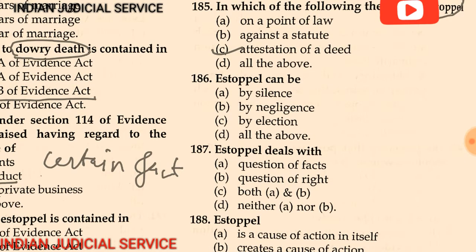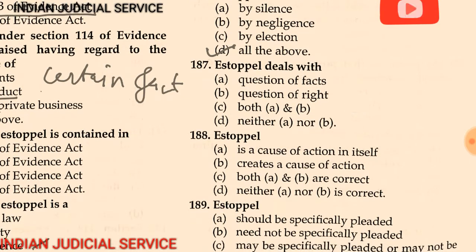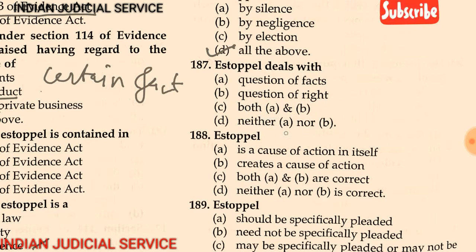Question 186: Estoppel can be by — (A) silence, (B) negligence, (C) election, (D) all of the above. The answer is all of the above — estoppel can be by silence, negligence, or election. Question 187: Estoppel deals with — (A) question of fact, (B) question of right, (C) both A and B, (D) neither A nor B. The answer is: estoppel deals with a question of fact.